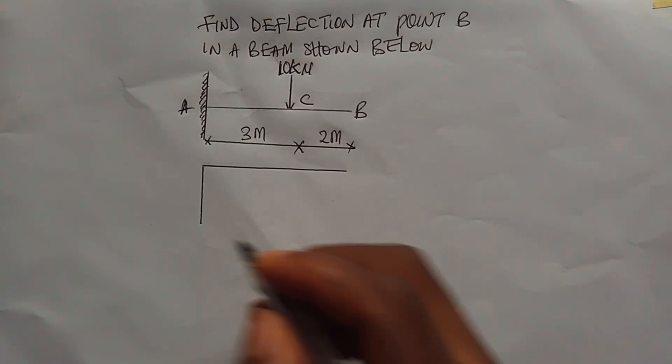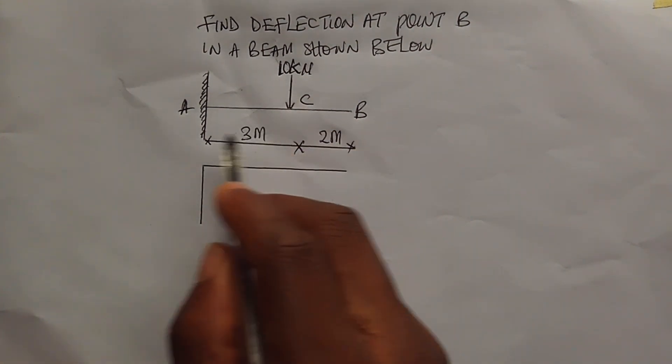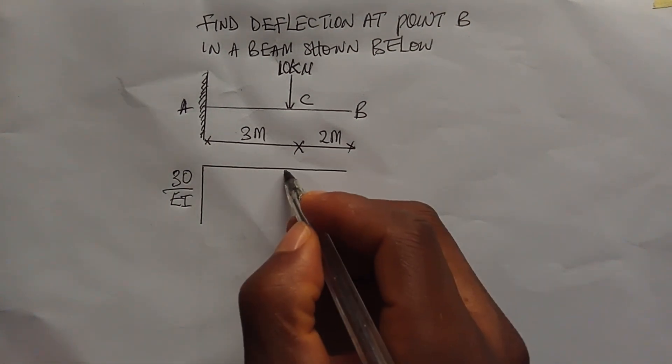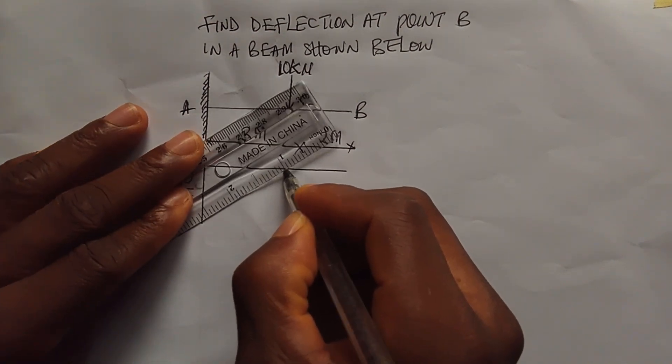The bending moment diagram at this point A is going to be 10 multiplied by 3, which is 30 all over EI. Then the bending moment diagram will turn to 0 at point C. So you connect it.